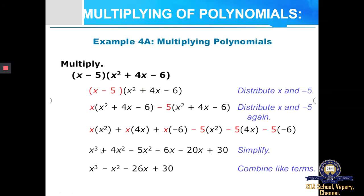Then we get back to the X square term, that is minus 5X square. Minus and plus again gives me minus, so 6 into X is minus 6X. Then 4 into minus 5 gives me minus 20X. And then minus into minus gives me plus, and 6 into 5 is 30.